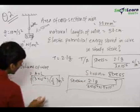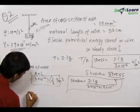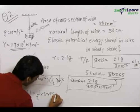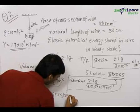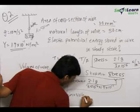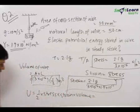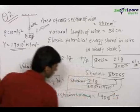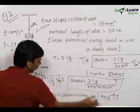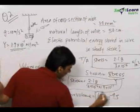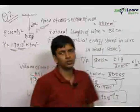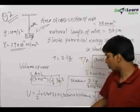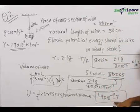On multiplying stress, strain, and volume together and then dividing by 2, we get the elastic potential energy stored in the wire: PE = ½ × stress × strain × volume = 1.9 × 10⁻⁴ joules. Substituting these three values into the equation gives the final answer of 1.9 × 10⁻⁴ joules.